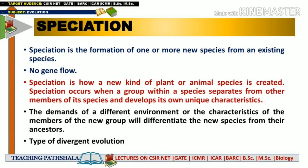With this we have completed the concept of species. Now let's see what is speciation. Speciation is the formation of one or more new species from an existing species, and in that process there is no gene flow. Speciation is the way through which a new kind of species forms from the existing one, making them two totally distinctive groups with reproductive isolation between them.